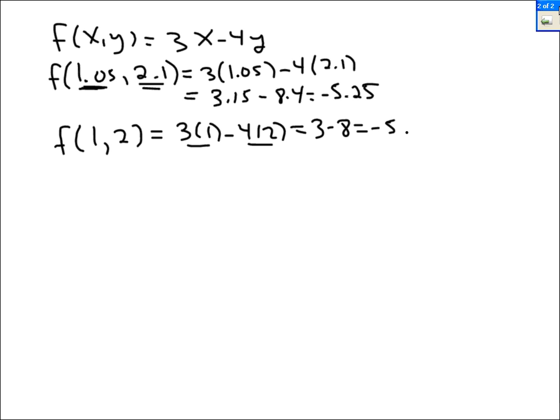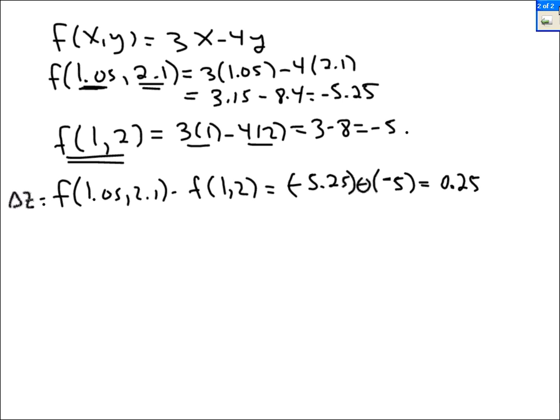Now, what is the difference between the exact answer and our approximation? So the change in z would be f of 1.05, 2.1 minus f of 1 comma 2, which is negative 5.25 minus negative 5. When you subtract, you find out how much bigger one number is than another. The difference is 0.25. And since this number is smaller, smaller minus larger is always negative. And that's the change in z.